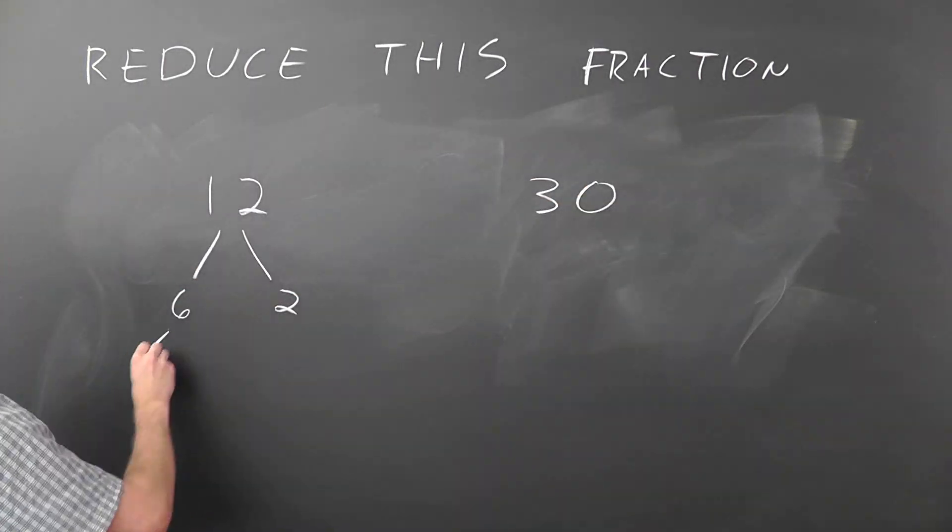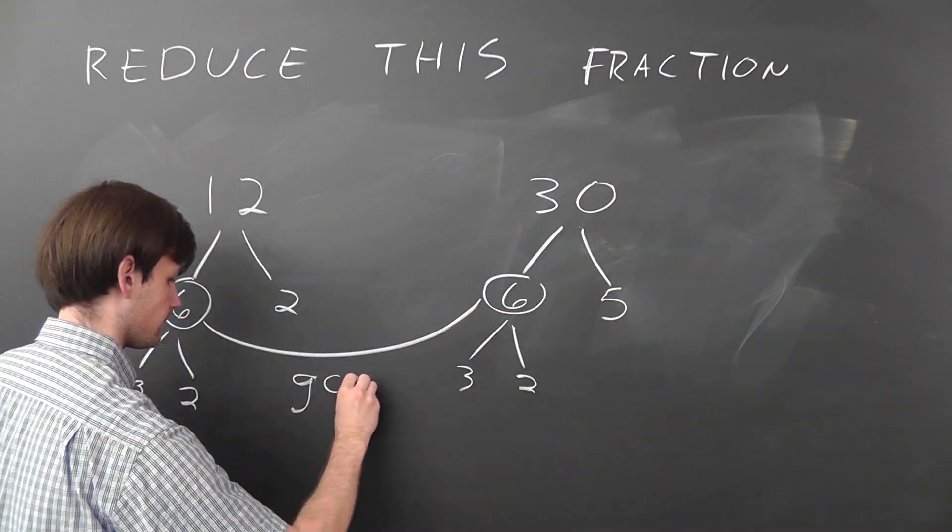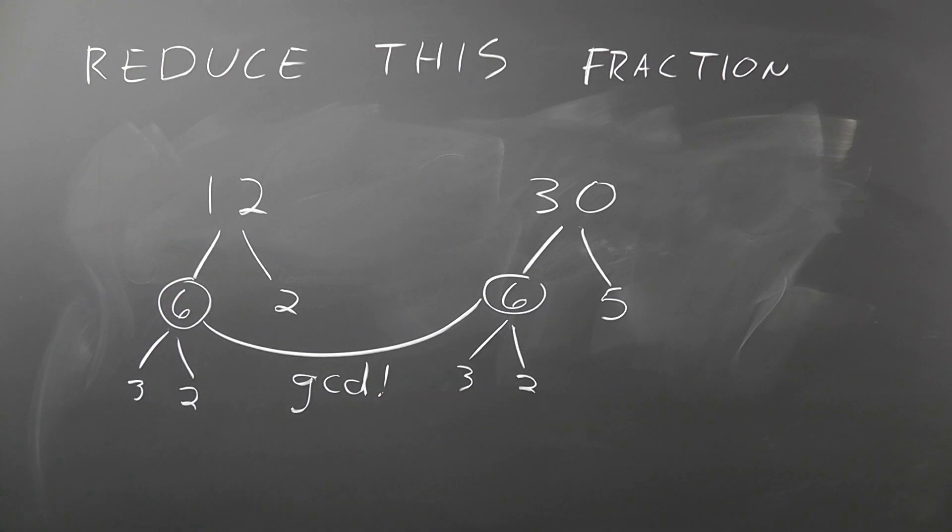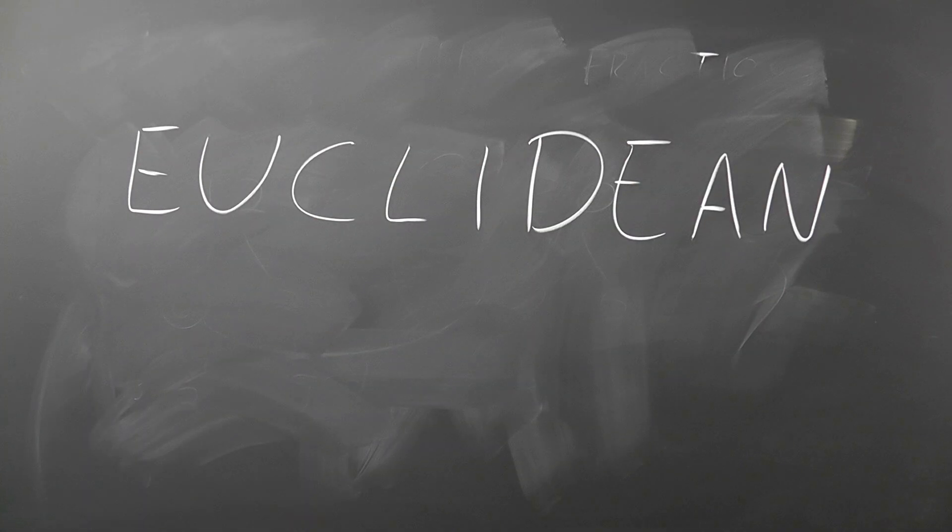Well, you could find the factors of each number and select the greatest of those, or you could use a trick from around 300 BC, the Euclidean algorithm.